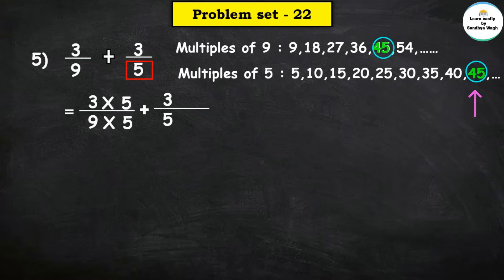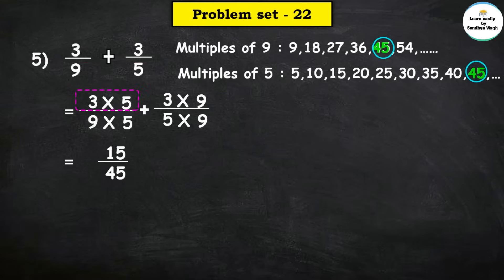The common multiple is 45. For 3 upon 9: 9 times 5 = 45, numerator 3 times 5 = 15. Plus 3 upon 5: 5 times 9 = 45, numerator 3 times 9 = 27.